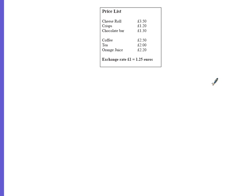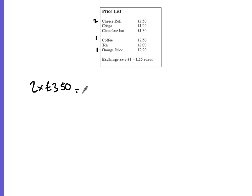Question 22: Tim is travelling home from holiday by plane. He buys some food and drink — two cheese rolls, a coffee, and an orange juice — and pays part of the cost with a 10 euro note, the rest in pounds. Let's work out the total cost: two lots of £3.50 is £7.00, then we've got £2.50.